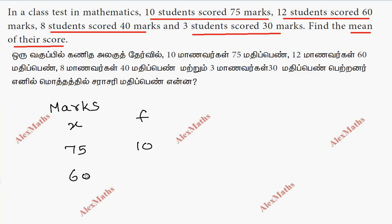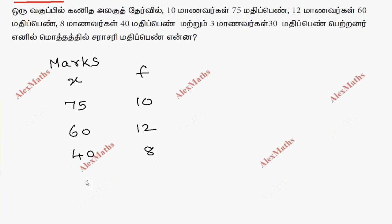For 60 marks, 12 students. 8 students scored 40 marks, so 40 is 8. 3 students scored 30 marks, 30 marks, 3 students. The table is complete.